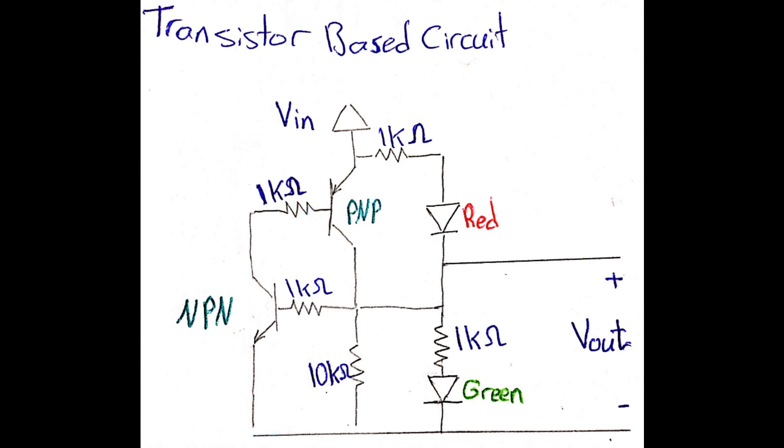This will establish a direct connection between the input and the output through the NPN transistor, shorting the red LED and lighting up the green LED as an indicator.